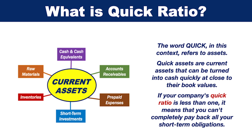If your company's quick ratio is less than 1, it means that you can't completely pay back all your short-term obligations.